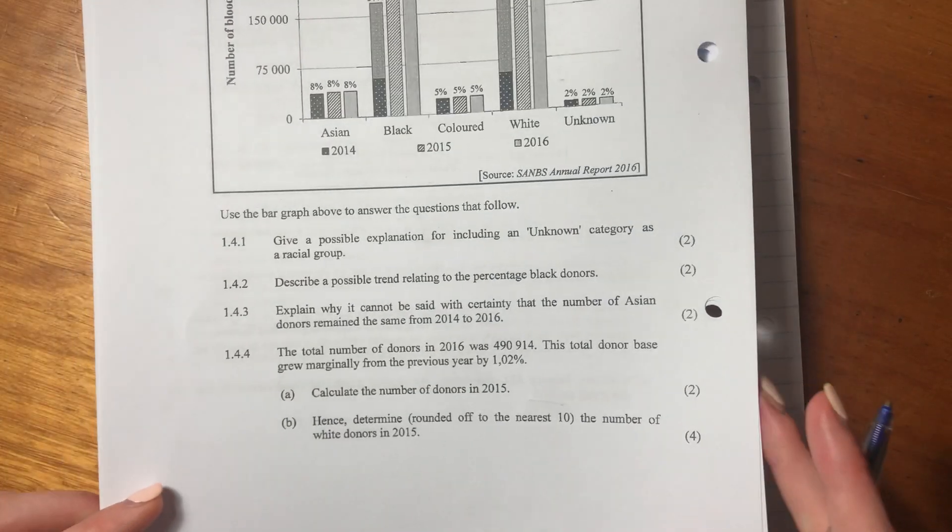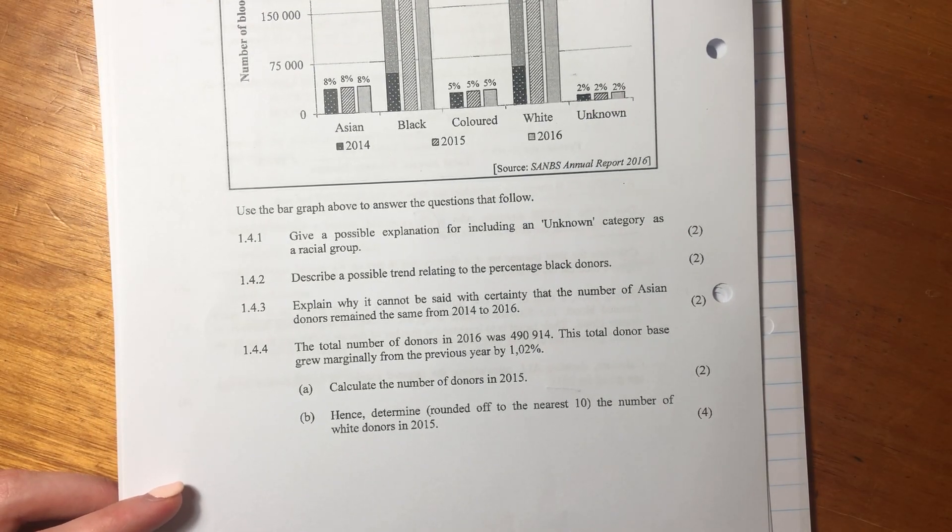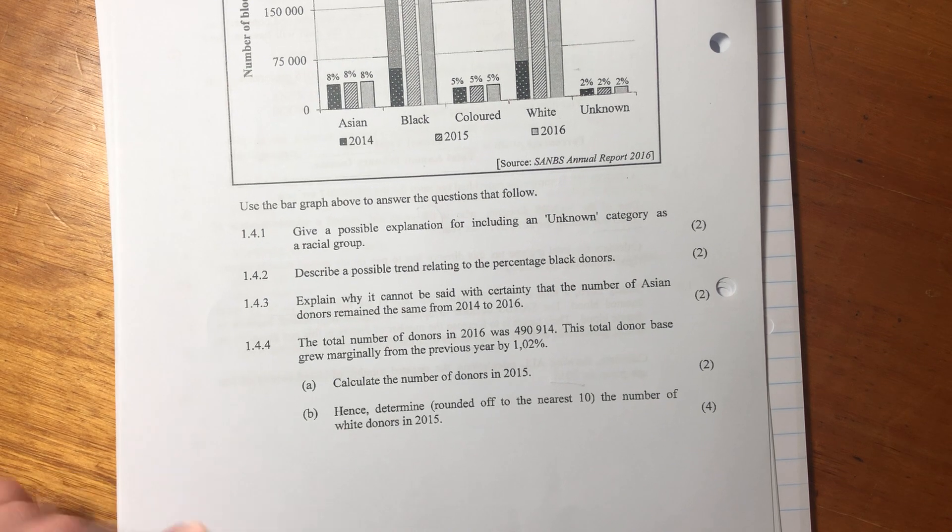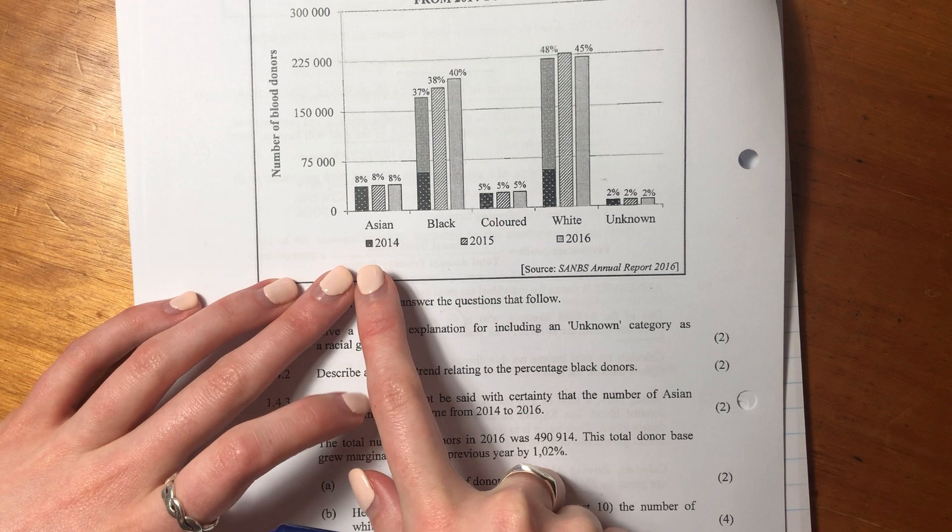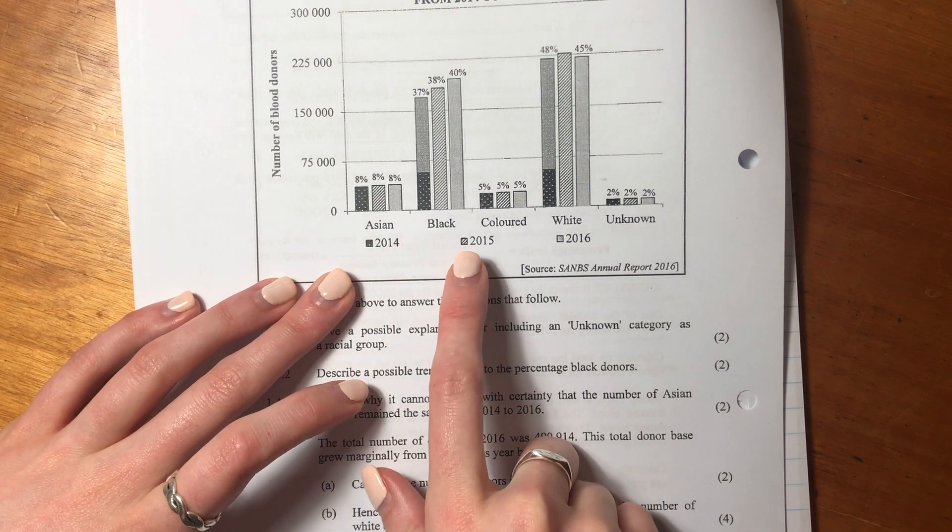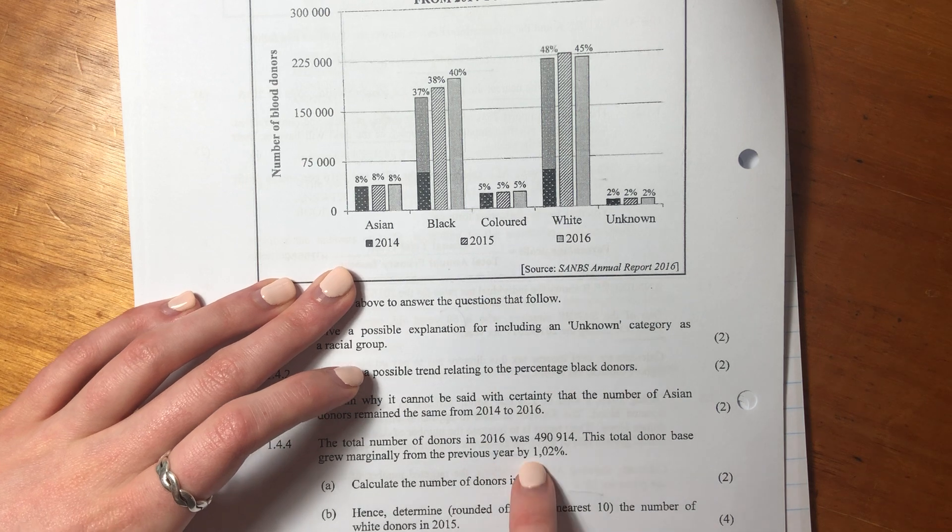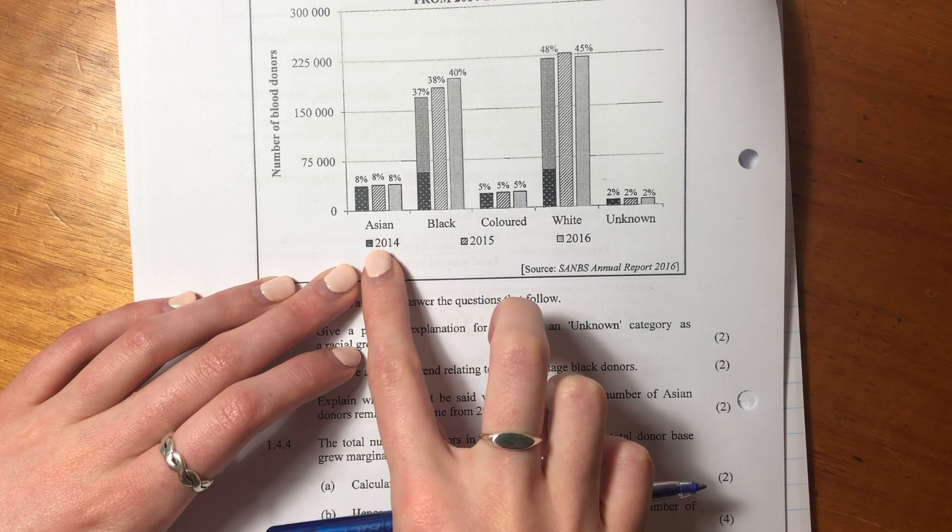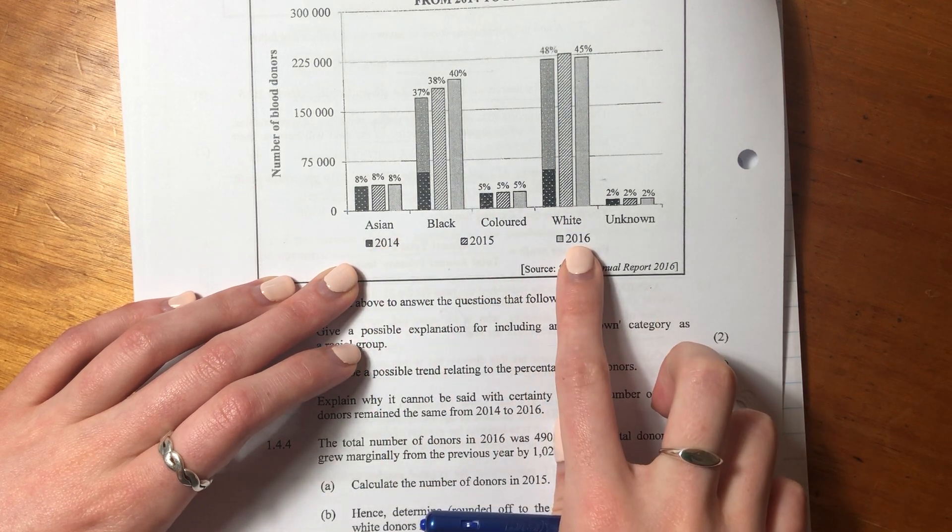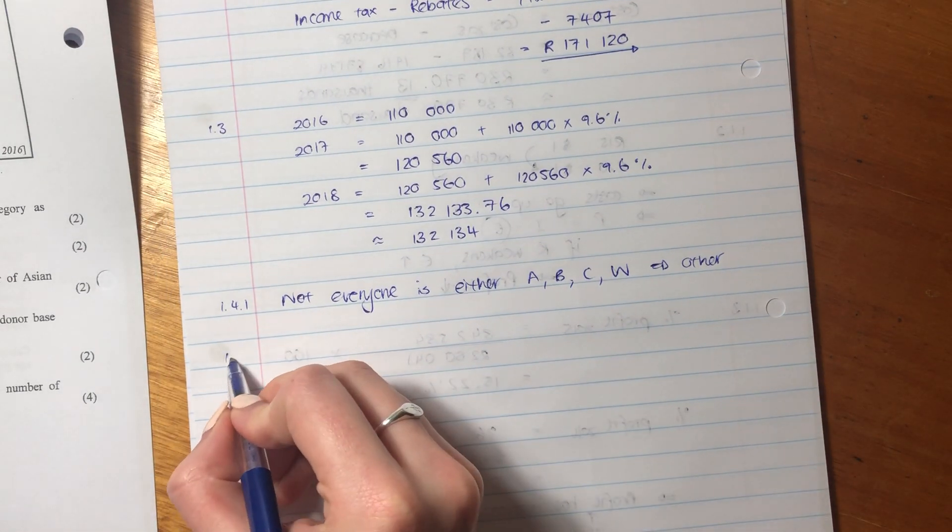You can look at the memo. There's a variety of answers there, but I'm just giving you the one that's most obvious to me. Let's look at the next question. It says describe a possible trend relating to the percentage black donors. So if we look at the percentage black donors, we see that in 2014 it was 37, in 2015 it was 38, and in 2016 it was 40%.